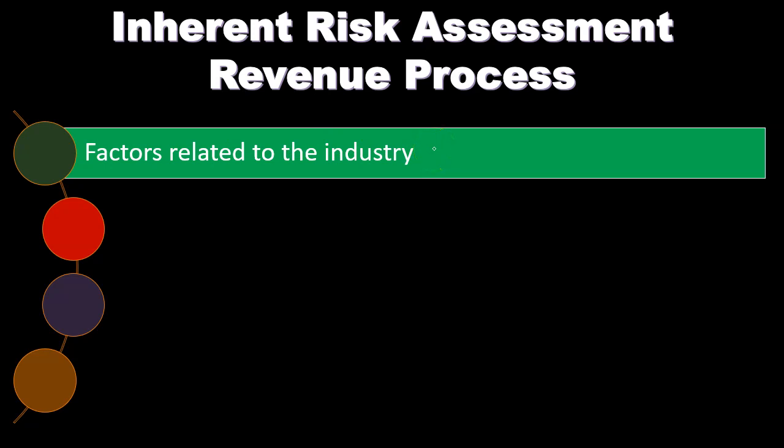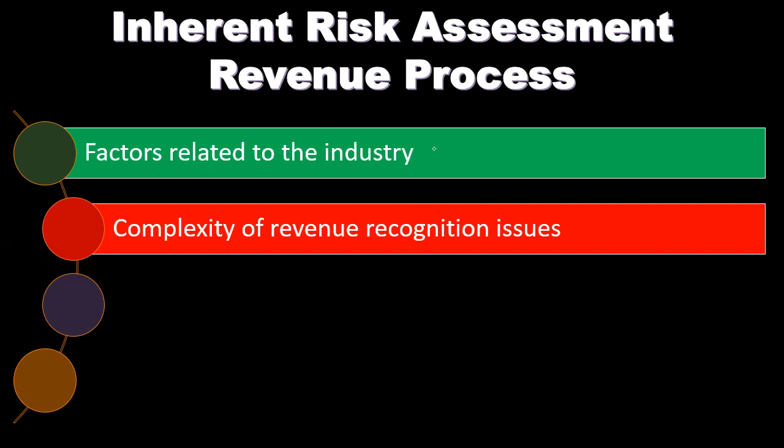What type of industry are they in? Some industries are just more inherently risky with the revenue recognition process. There could be different components within that risk — for example, we might be in a type of industry that has a high degree of non-payment of receivables, or a high degree of sales with a high degree of bad debt. We want to know what the inherent risks are related to the factors of the industry that they are in.